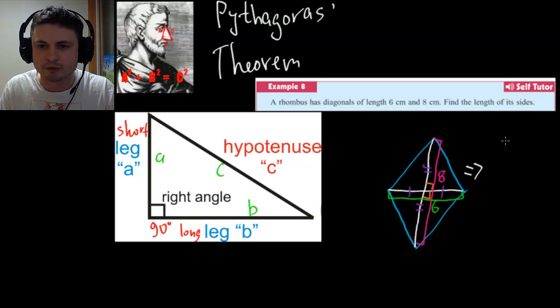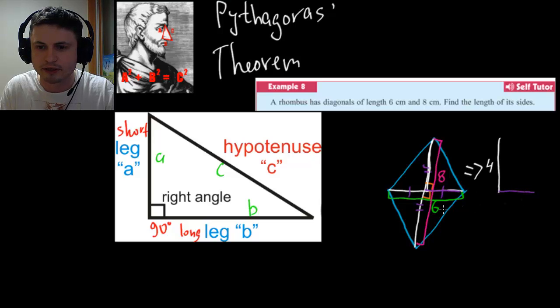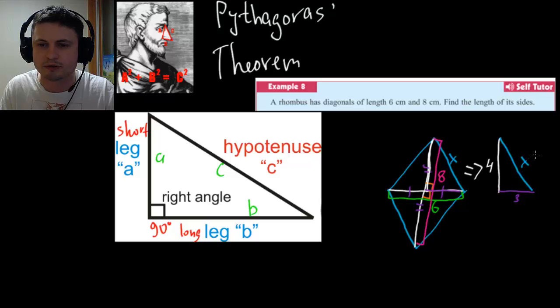So step number one here is to redraw this so that it actually makes sense. And what we have is, let's just draw one of the triangles. So we have a triangle with a longer leg, the longer leg right here. And this is actually half a diagonal, right? And then the diagonal is eight, so this is four. This right here is four. Then we have the shorter side. Let's actually use a different color. The shorter side right here. And this side is half of six, which is three. And lastly we have our hypotenuse, which is basically this side. This is X. So we need to find the hypotenuse or the side of the rhombus.